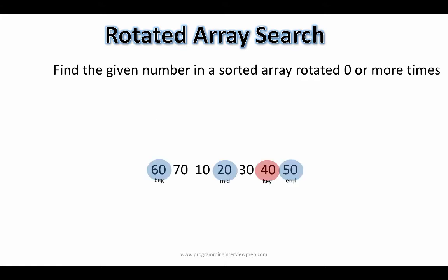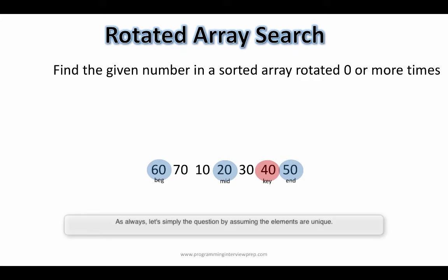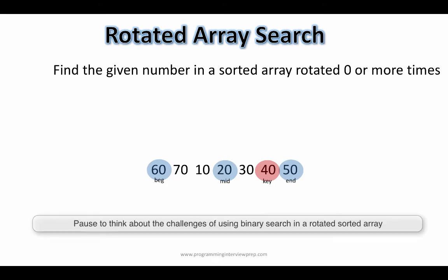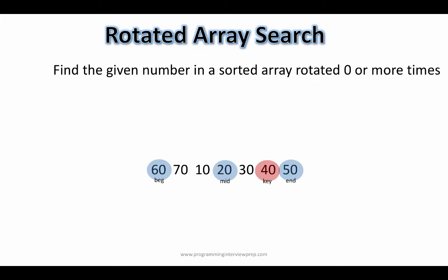You're given an array like this, and you're asked to find if the given number — say 40 — exists. Let us try to see if we could use binary search. The problem is, the number 40, which is bigger than the mid value 20, is on the right hand side of 20.